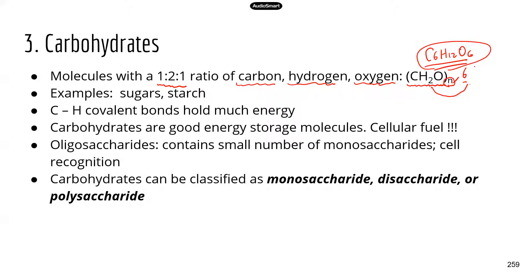You need to remember this because you need to know glucose and its chemical formula, just in case. Examples of carbohydrates include sugars — all those simple sugars I mentioned — and also some of the complex carbohydrates like starch and fibers. So fibers are also carbohydrates. You probably never thought about the fact that simple sugars, starch, and fibers are actually the same type of macromolecule, but they are — they're all carbohydrates.